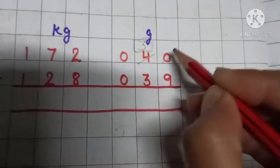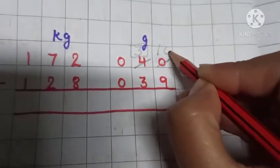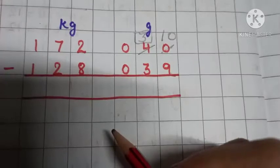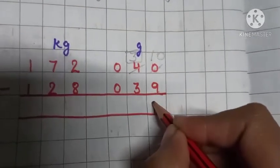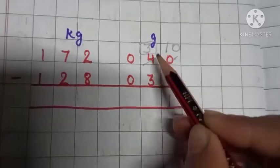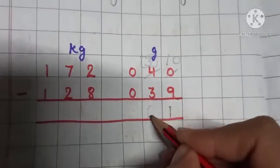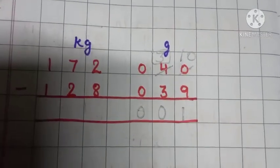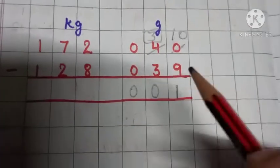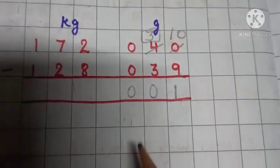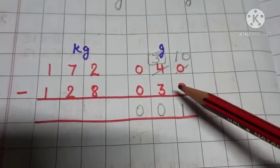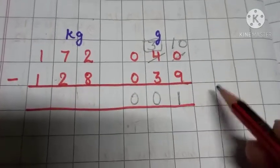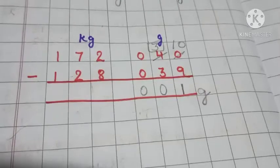And here we have now 10. So when we subtract 9 from 10, we get 1 here. Now, subtract 3 from 3, we get 0. And here we have nothing to subtract. So write 0 here. Because we have to write the values of gram in 3 digits. So when we subtract 39 gram from 40 gram, we are left with only 1 gram.